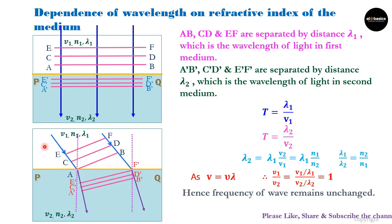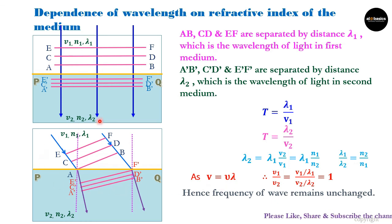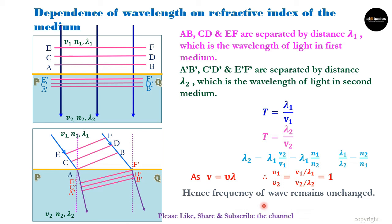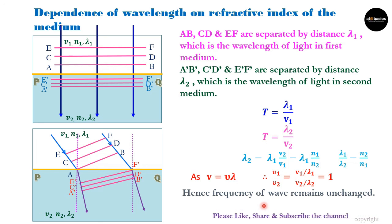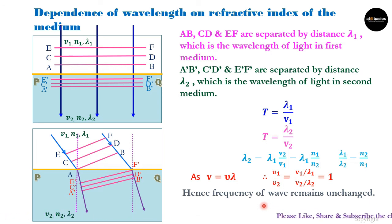For oblique incidence, we can observe here that the wavefronts are more separated in the first medium and closer together in the second medium. Applying the same analysis, we arrive at the same conclusion: frequency of the wave remains constant and unchanged irrespective of the medium in which it is propagating. Because of this, we consider frequency as the basic property of light. So wavelength depends on the medium and changes, speed changes, but frequency is independent of the medium and remains constant.